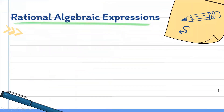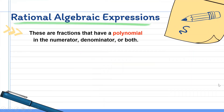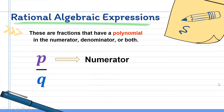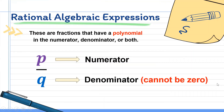So what do we mean by rational algebraic expressions? Rational algebraic expressions are fractions that have a polynomial in the numerator, denominator, or both. It is denoted by p all over q, where p is your numerator and q is your denominator. Take note that the denominator should not be equal to zero, because if the denominator becomes zero, then the fraction is already undefined.